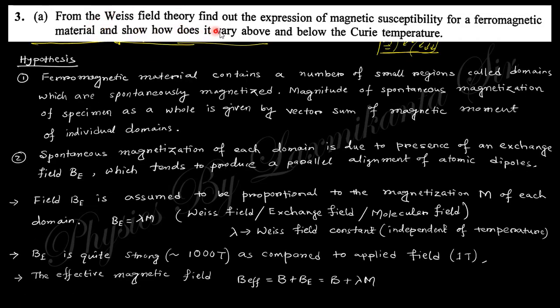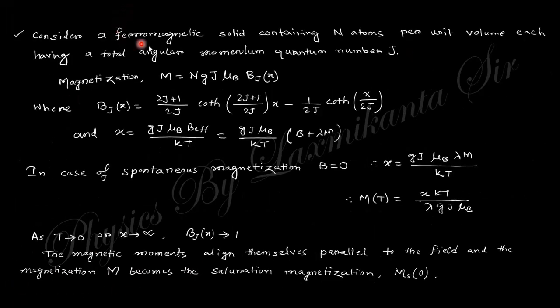Show how does it vary above and below the Curie temperature. In ferromagnetic material, the field that originates is proportional to magnetization. It's known as the Weiss field theory. If you consider a ferromagnetic solid containing N atoms per unit volume, then the magnetization will be like that.